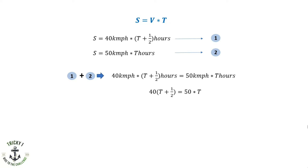If you simplify, you will get t equals two. So the owner took two hours to catch the thief.